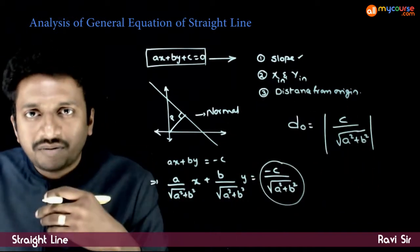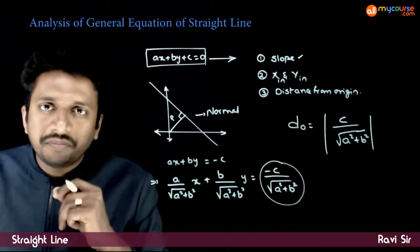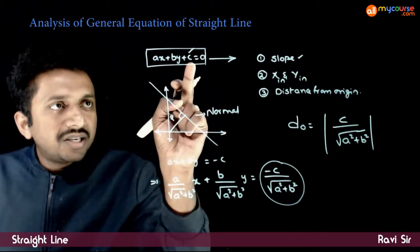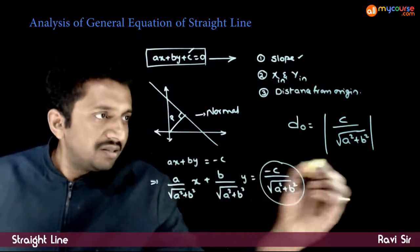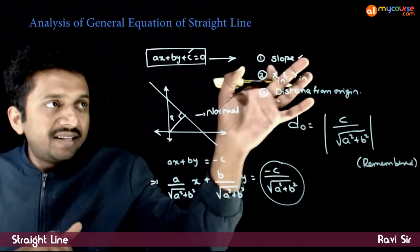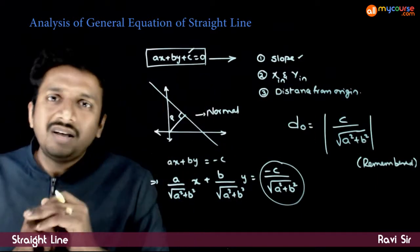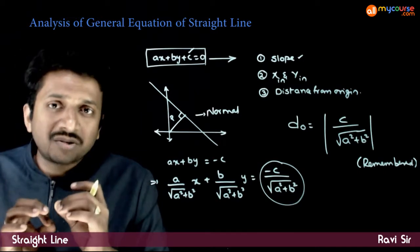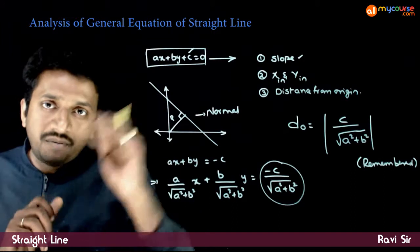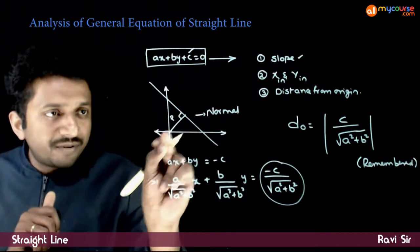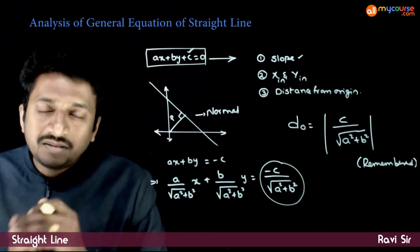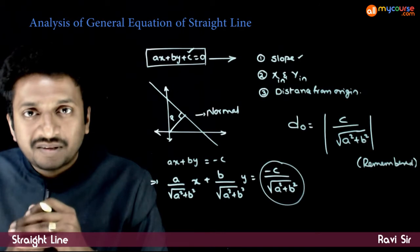The modulus is used because we do not know whether c is positive or not, so we take the positive value. The distance from origin is the constant term divided by root of a squared plus b squared — this has to be remembered. So these are the three things about the general equation of a straight line: the slope is minus of x coefficient by y coefficient; for x-intercept, put y equal to 0 and find x; for y-intercept, put x equal to 0 and find y; and the distance from origin is given by mod of the constant term divided by root of a squared plus b squared.